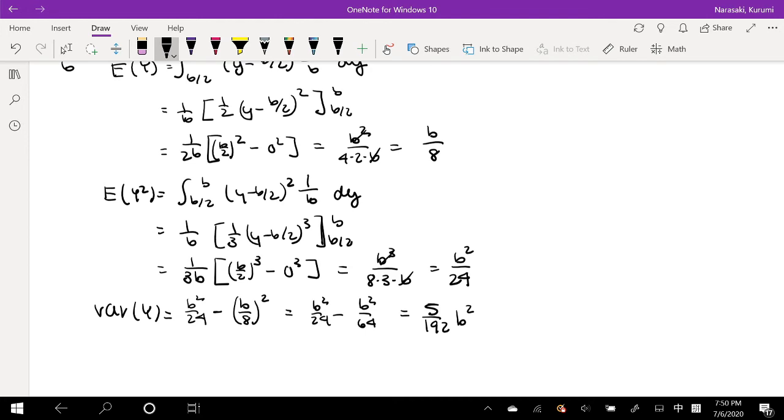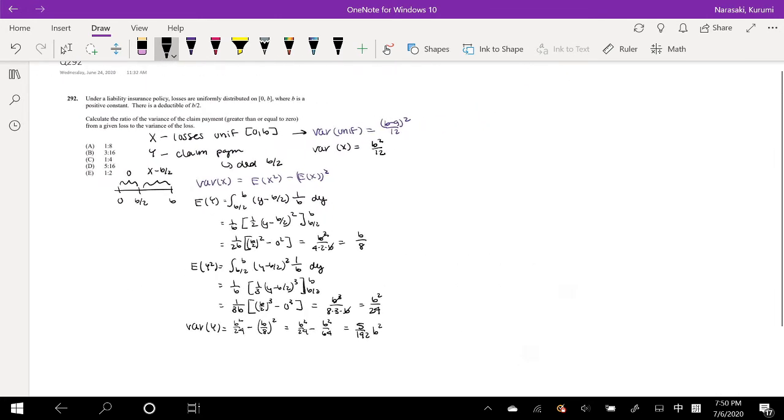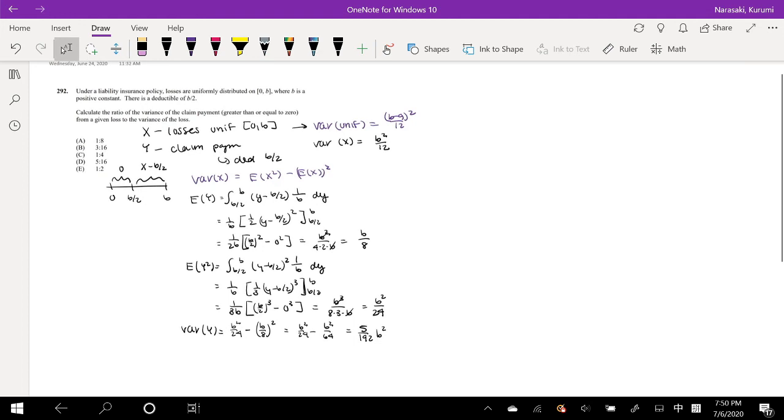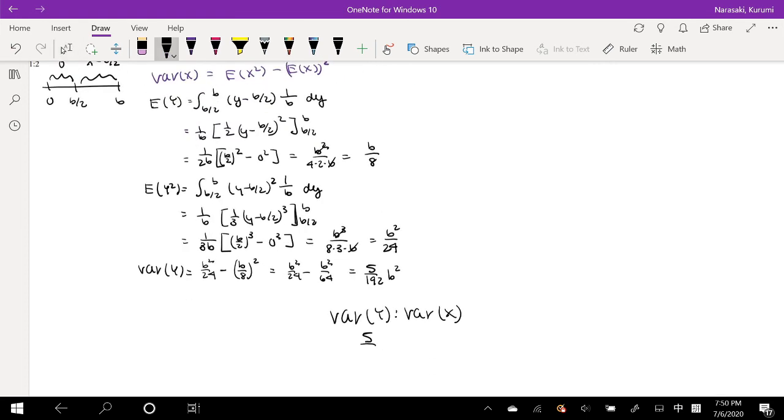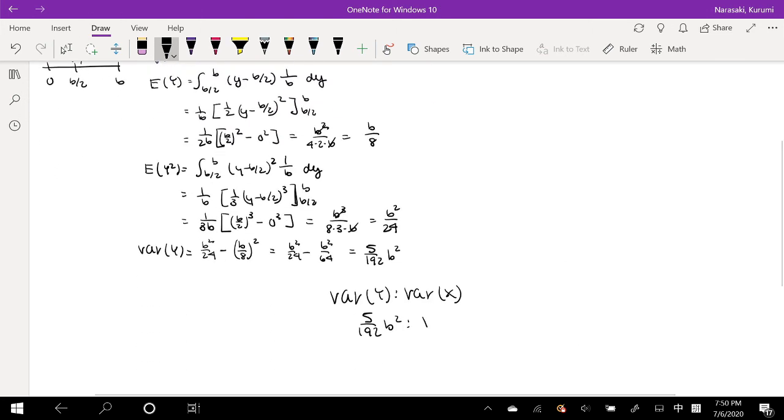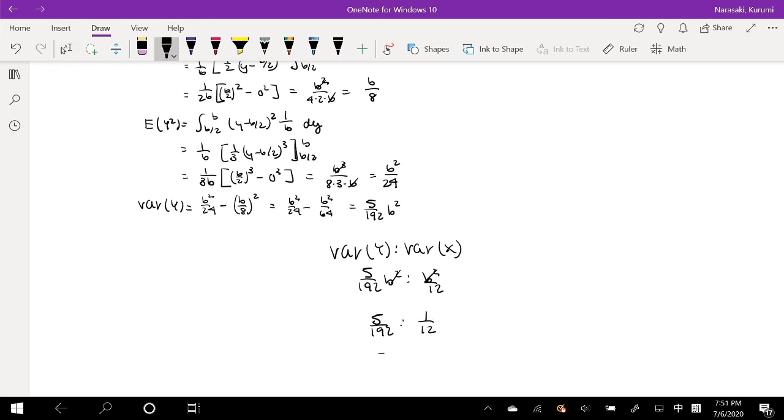So this is equal to 5 over 192 b squared. Okay, so then we have to just divide this variance. We're looking at the ratio of the claim payment to our variance, the variance of our X. Okay, so this is equal to 5 over 192 b squared, and ratio to b squared over 12. Okay, so these squares cancel out. So we get 5 over 192 to 1 over 12.